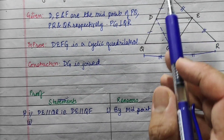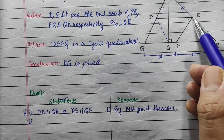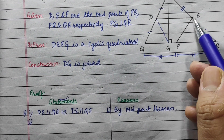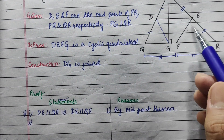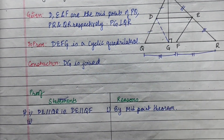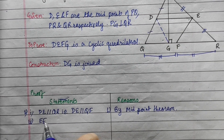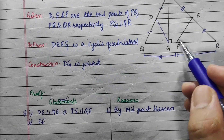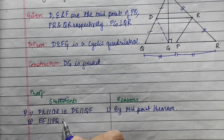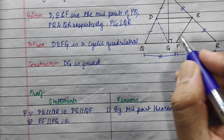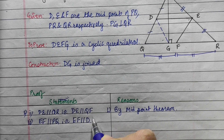E is the midpoint of PR and F is the midpoint of QR, so by the midpoint theorem, EF is parallel to QP. Therefore EF is parallel to DQ.